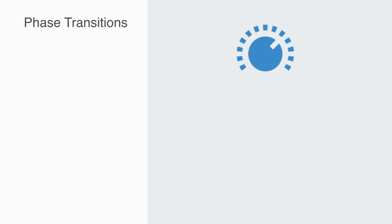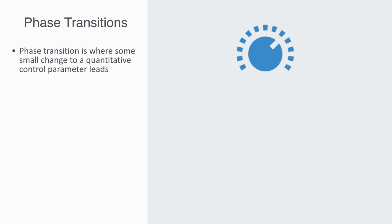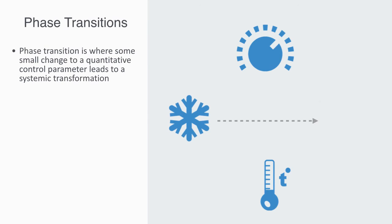Symmetry breaking is part of a broader process of change called a phase transition. A phase transition is where some small change in a quantitative control parameter leads to a systemic transformation. For example, the control parameter might be temperature, and at some critical point, when we change it only a small amount, we will get solid ice changing to a gas — which is a systemic transformation. Solids and gases have fundamentally different properties.